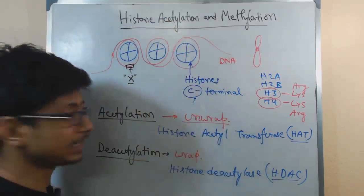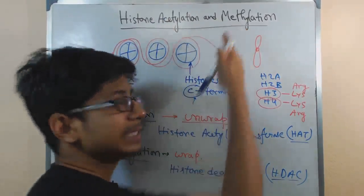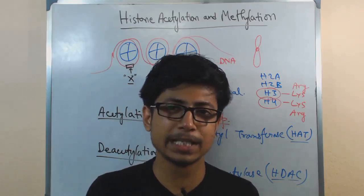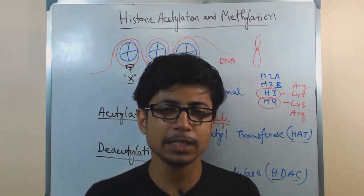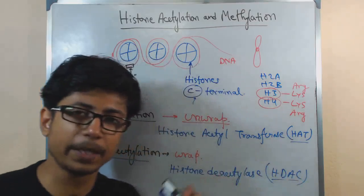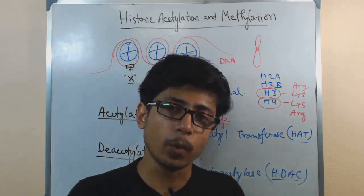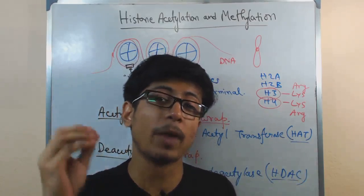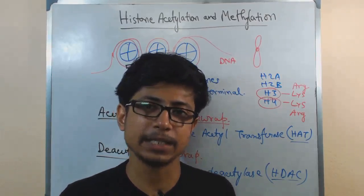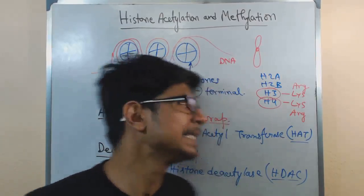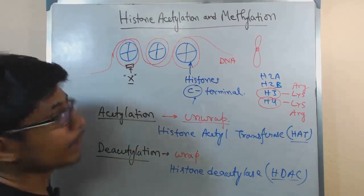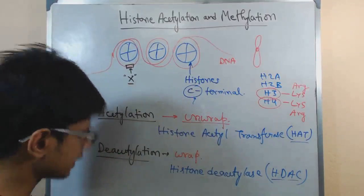So HAT unwraps the DNA — making the gene active and accessible — and HDAC rewraps it, making it blocked again. Those are the functions of the acetylation part. Now let's talk about methylation. There is confusion about methylation because some books say it helps in activation of a gene, while others say it helps in inhibition. In a way, both are true, because methylation depends on the situation — what kind of methylation is occurring and where exactly it is happening.